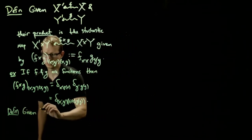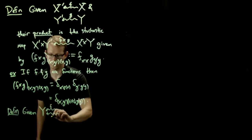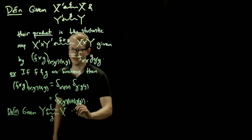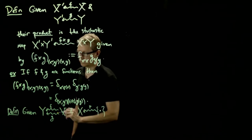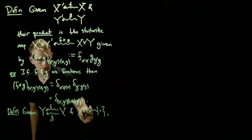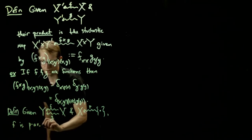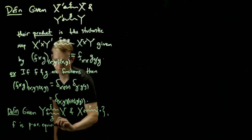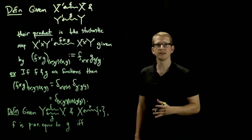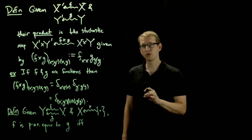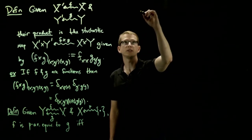So given two stochastic maps, so I'm using different notation than what's up here. So given two stochastic maps and a probability measure on x, we say that f is p almost everywhere equivalent to g if and only if.